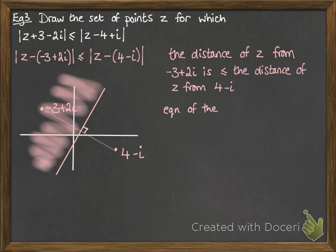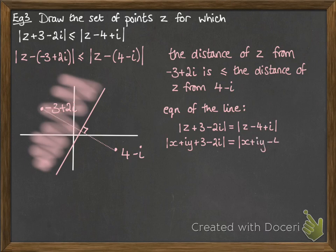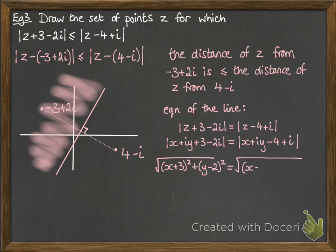Okay, now getting the equation of that line, we set them equal to each other and then we solve it. So remember z is just x plus iy, so we put those values back in so that we can go ahead and solve this. So doing the modulus of those means that we will square the real and the imaginary parts, add them together and square root it. Set them equal to each other on both sides.